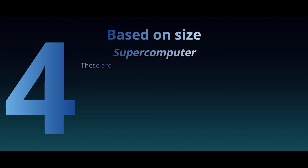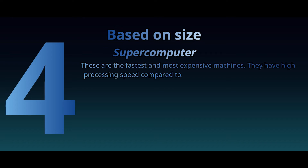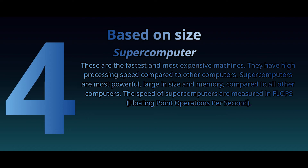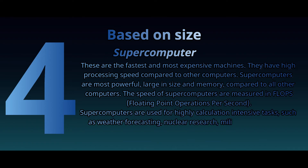Supercomputer: These are the fastest and most expensive machines. They have high processing speed compared to other computers. Supercomputers are the most powerful, large in size and memory compared to all other computers. The speed of supercomputers is measured in flops. Supercomputers are used for highly calculation-intensive tasks.